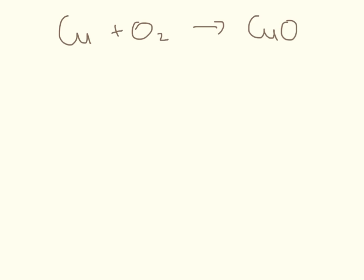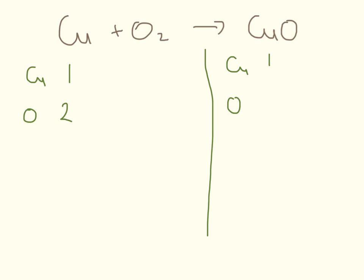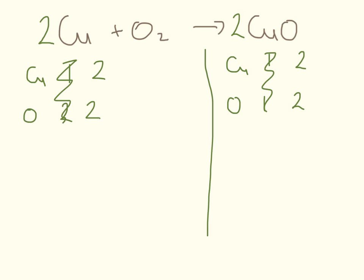Here copper and oxygen are making copper oxide. My line goes down the middle — copper, oxygen on the left; copper, oxygen on the right. At the moment I have one copper and two oxygens on the left, and one copper and one oxygen on the right. I need to increase oxygens on the right, so I'll pop a two in front of CuO. Crossing out and looking again: I have two coppers and two oxygens on the right — oxygens are now balanced but coppers are unbalanced. So I put a two in front of copper on the left, and everything is now balanced.